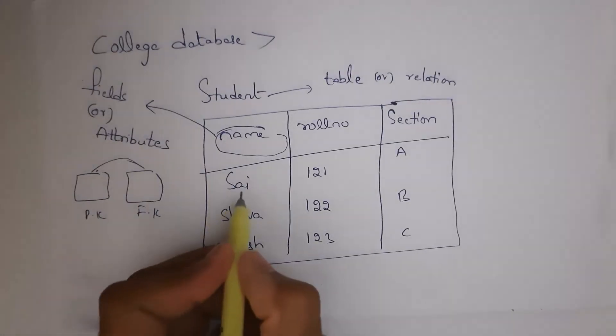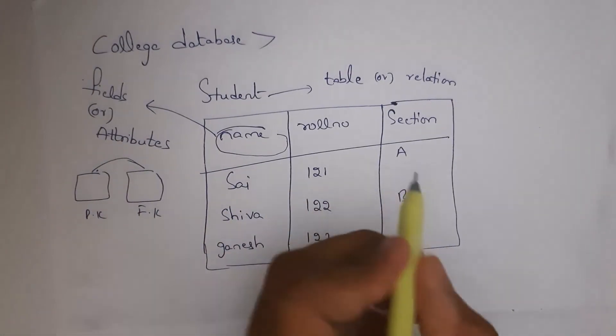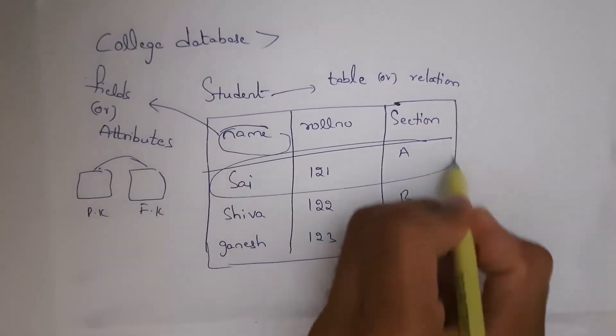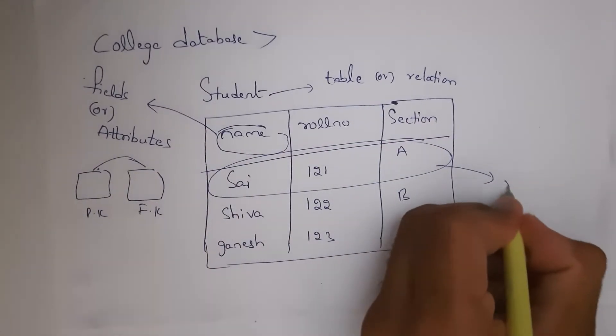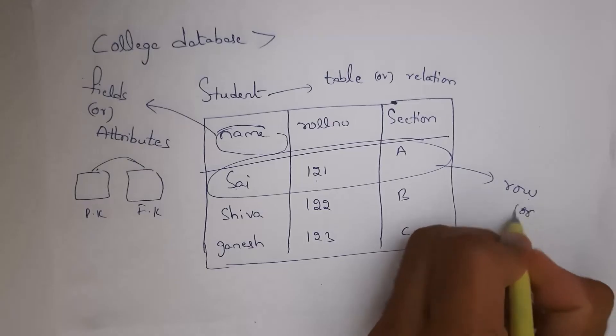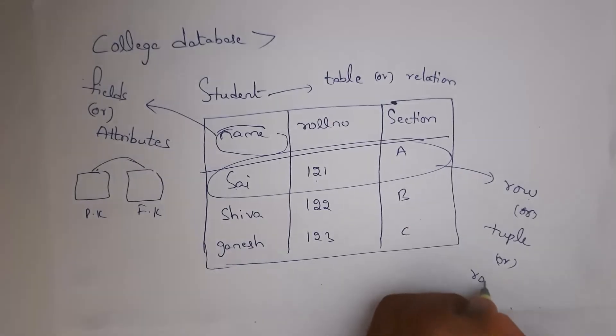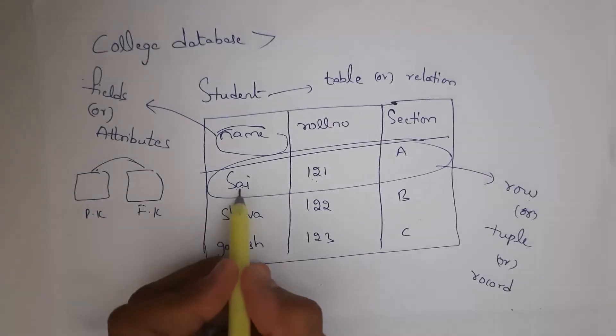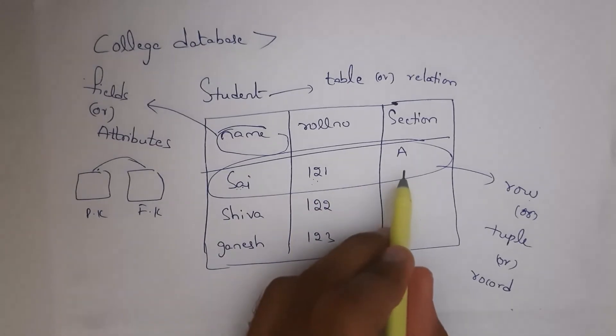For example, if you consider name Sai, roll number 121 and section A, this is one row. We can also call this row as tuple or record. All are same.